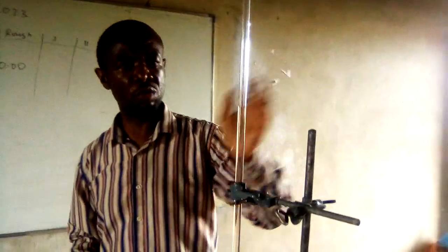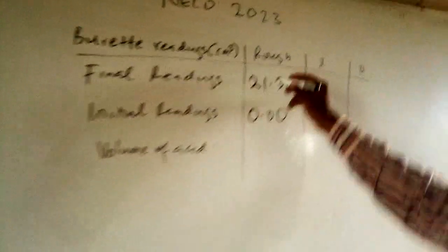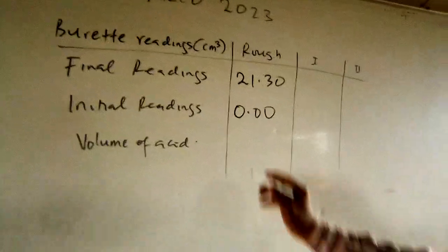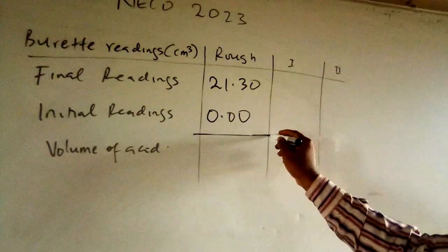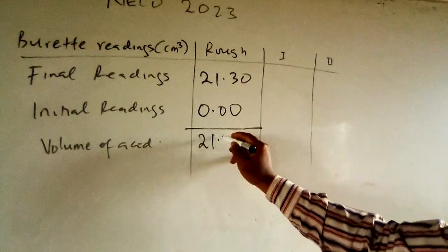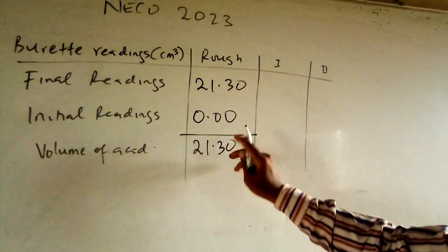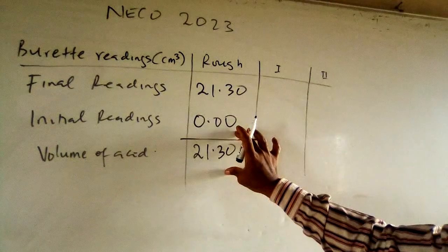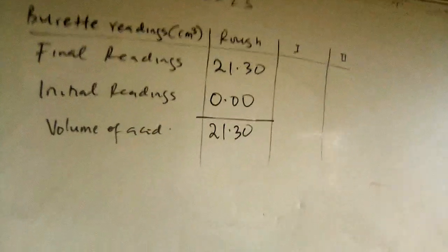The endpoint is indicated by an orange colour change. The final reading is 21.30 and the initial was 0.00, so subtracting gives a titre of 21.30 cm³ for the rough titration.